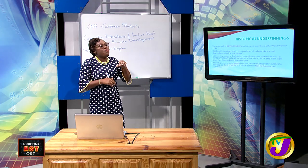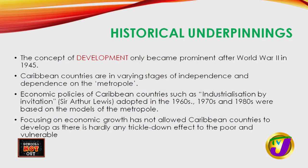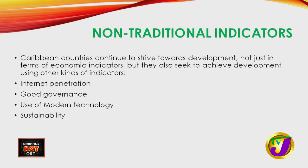We always had a history of dependency on the metropole. We were largely producers of primary goods to send to the metropole. The concept of development itself came out of World War II and the need for countries to determine how to access this idea called development. Over time we developed through different stages and are now in a stage called developing. Non-traditional indicators include internet penetration, good governance, use of modern technology, and sustainability.